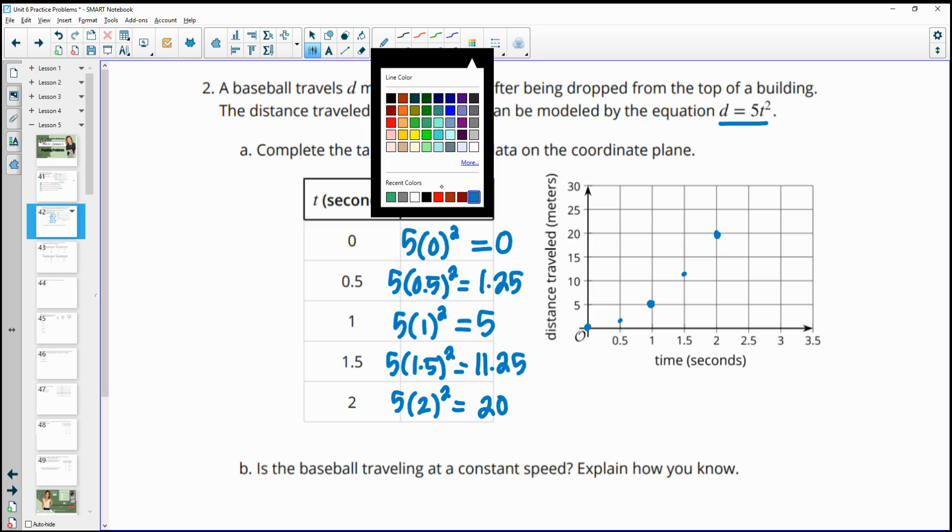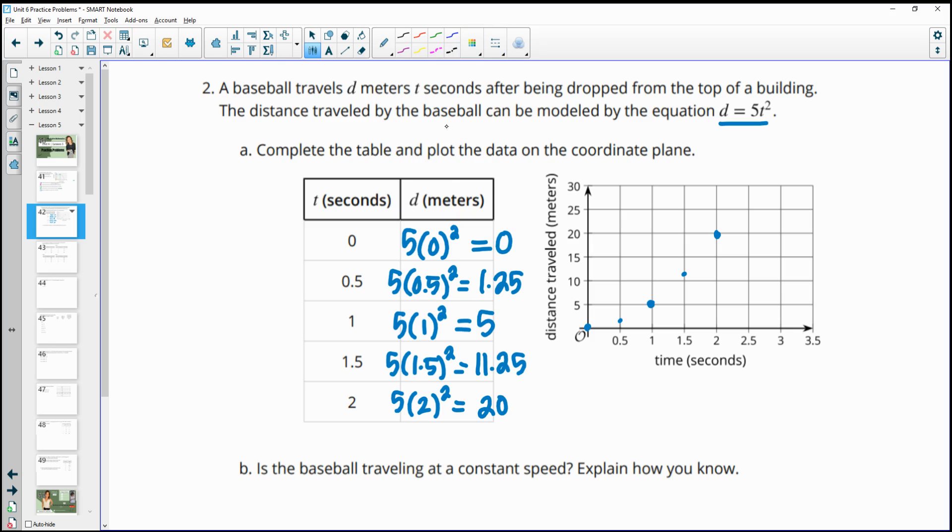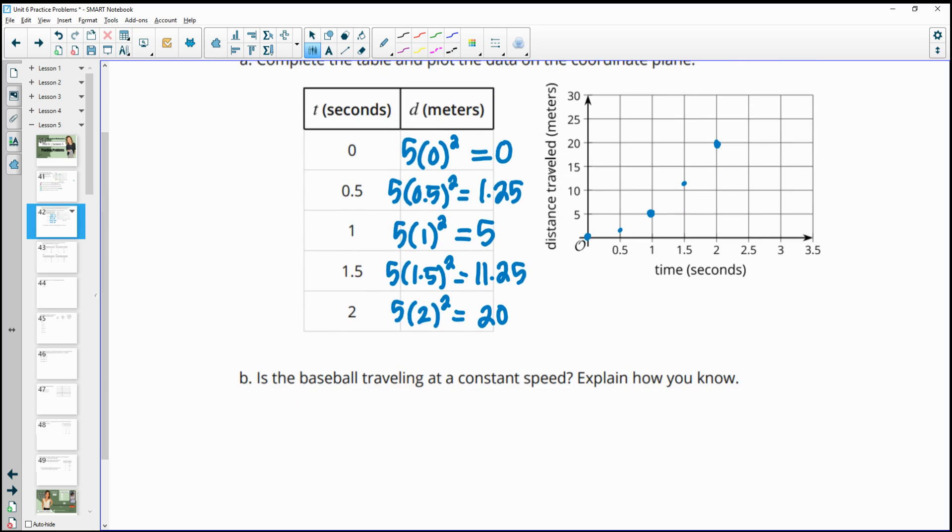Then it says, is the baseball traveling at a constant speed? So is it going up at a constant rate? We see here it went up 1.25 meters from 0 to 1.25. Then here it's going up 3.75. So the gap is getting wider. And then here it's 6.25 and so on. So no, the distance traveled is getting larger.